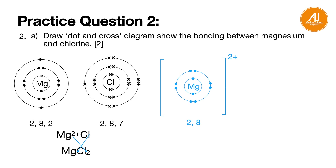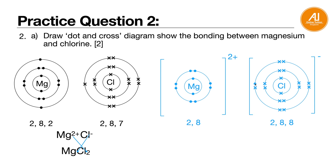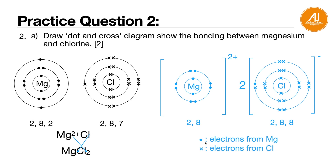Magnesium will give away 2 electrons, so it becomes 2+ and is left with 2,8 — the outer shell is gone. For chlorine, each chloride ion takes in 1 electron, going from 2,8,7 to 2,8,8, with a square bracket and negative charge. Don't forget there's a 2 in front, so you need 2 chloride ions. The black dot represents electron from magnesium, and the cross represents the electron from chlorine.